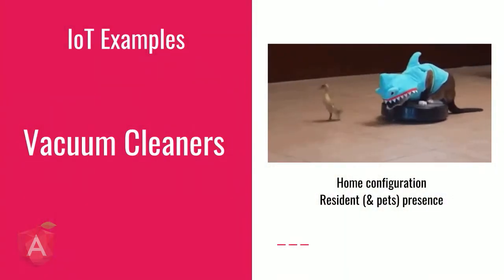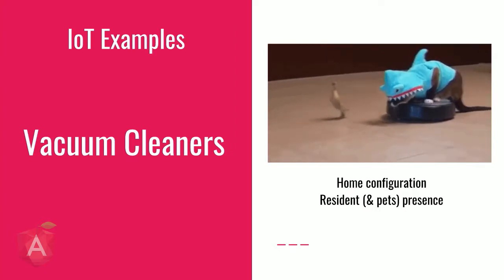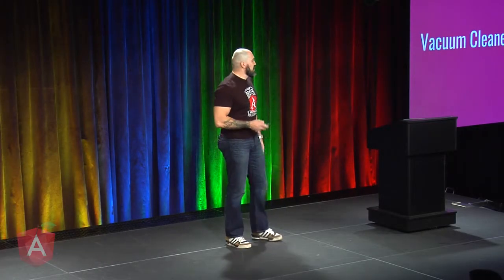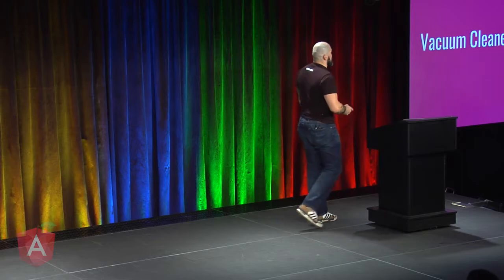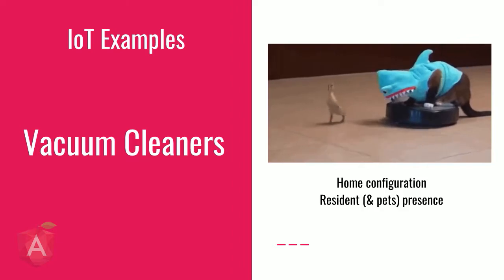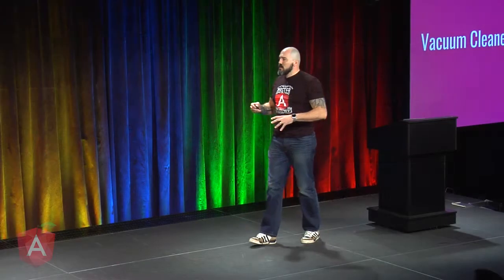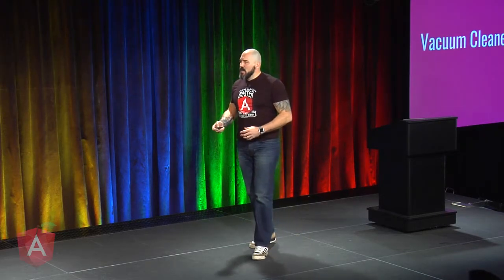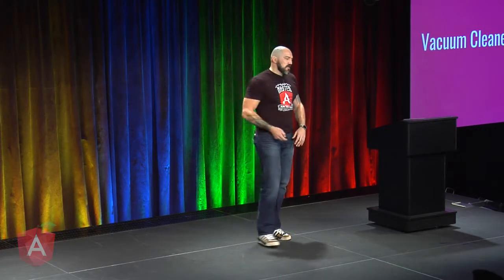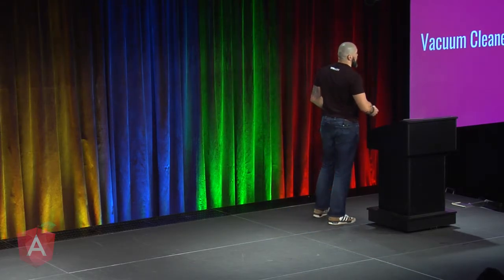Then there's vacuum cleaners. Who here has a Roomba? If you have a cat, it's a great experience to buy a Roomba just for your cat — they actually really enjoy that. What Roombas and other vacuum cleaners do is they connect with the internet to do some data analytics, and based on their configuration, they optimize the path they take. They also rely on resident presence so they activate when you're not around.